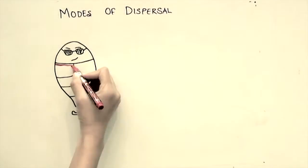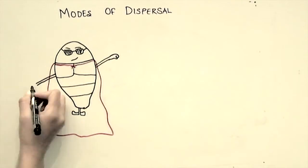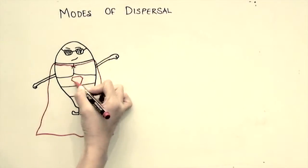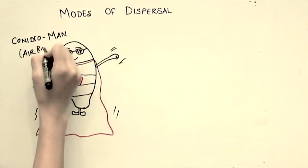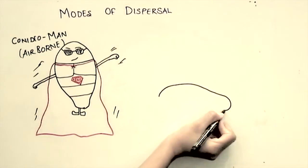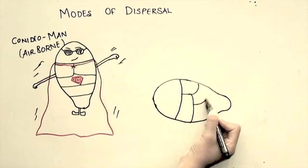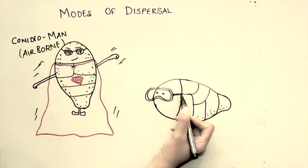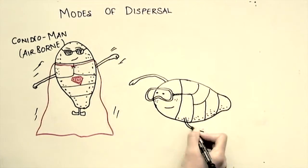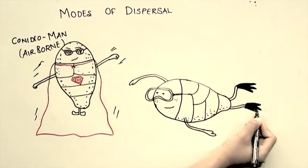These conidia have different modes of dispersal, either via wind or water. Conidia can move from one place to another with the air current like superman — or in this case, a conidio-man. They can also travel short distances within the leaf canopy or within the grove via rain splash, irrigated water, or dewdrops.